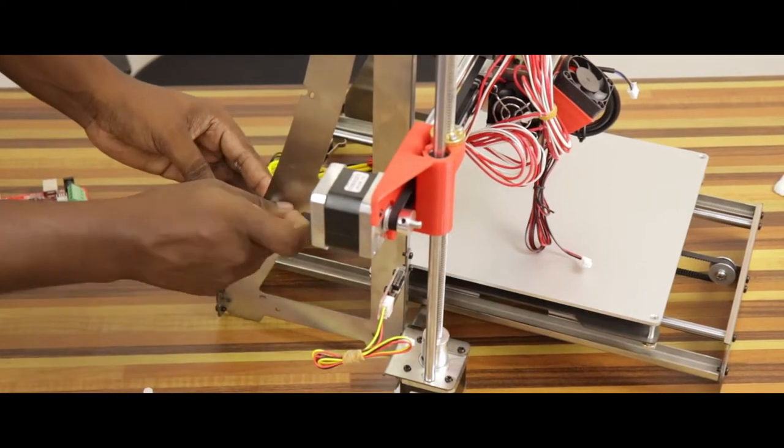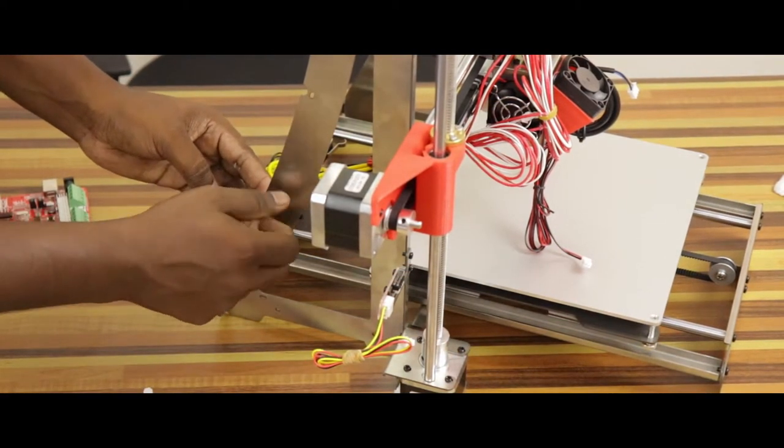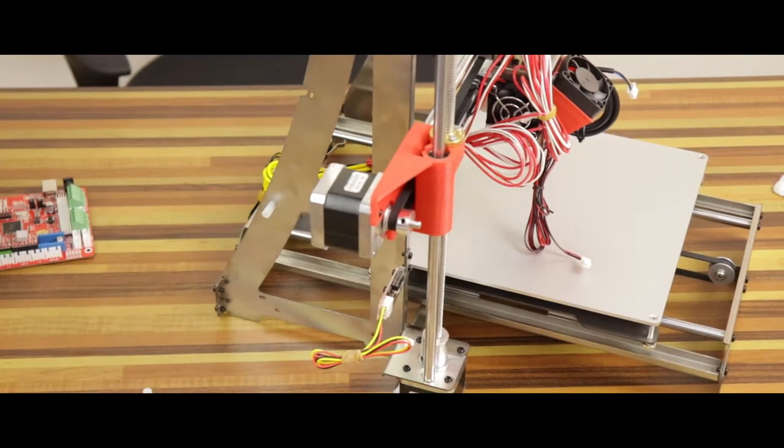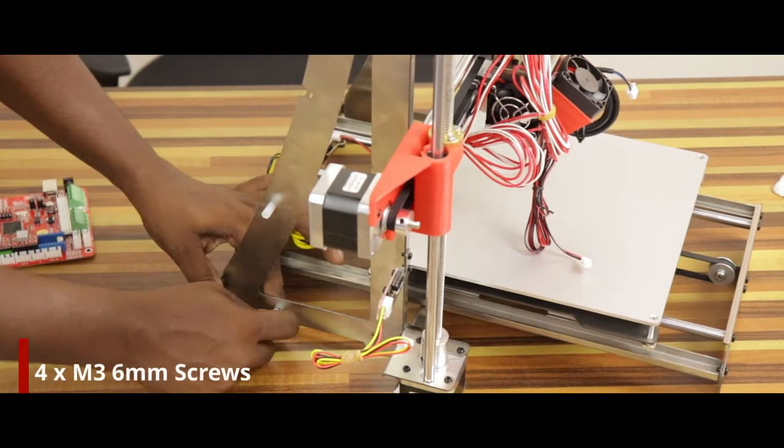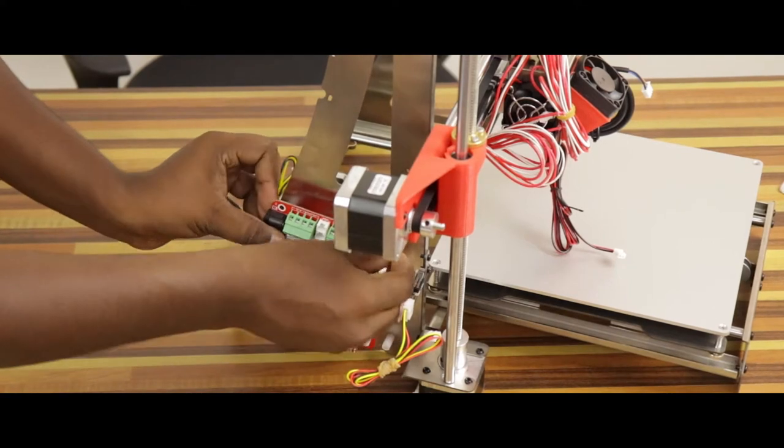It's time to install the controller board. First, insert the four M3 12mm poles to the left base frame using four M3 6mm screws and then fix the controller board using four M3 6mm screws.